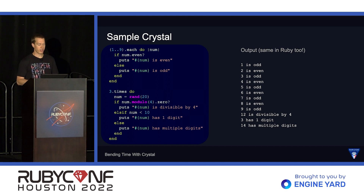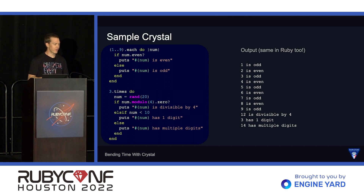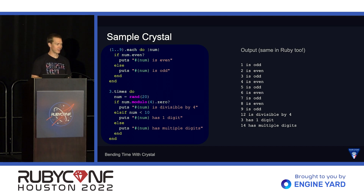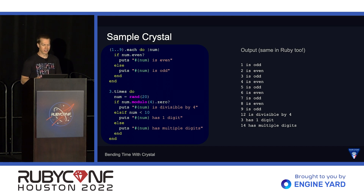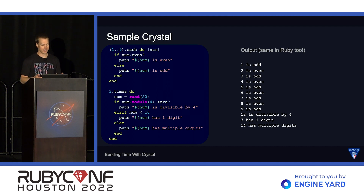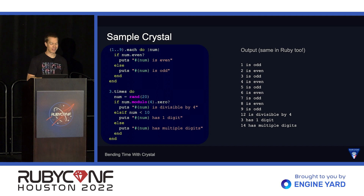And then we can see the output right here. We see the numbers 1 through 9, and then we see the three random numbers. We can run this exact same code as Ruby code and it will give us the exact same output. Now, one thing I do want to be clear on: Crystal isn't intended to be perfectly compatible with Ruby. In a bigger program, you can't just copy and paste Ruby code and have it work perfectly. But the language is very similar, and it forms a very powerful foundation for us.